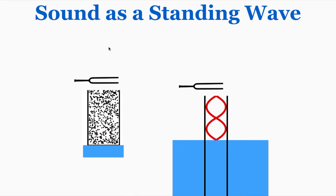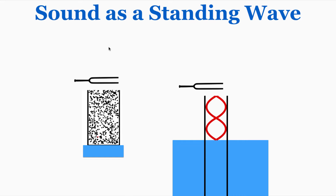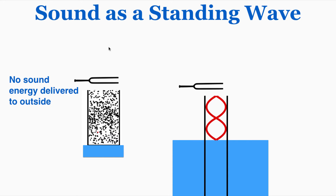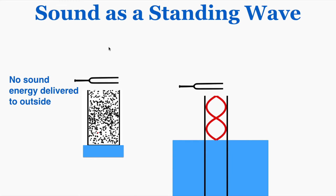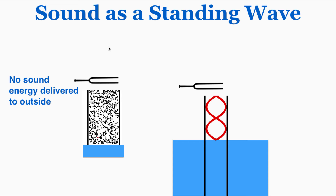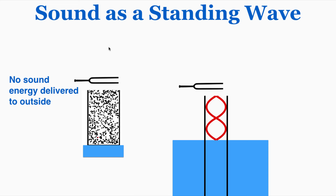When the tube is raised to where the opening is at the node, those top air particles just aren't moving at all, so because they're not moving they're not going to oscillate any of the air outside of the tube — there's no sound energy delivered to outside of the tube. The standing wave pattern doesn't continue once the sound exits the tube, so the only thing that determines the energy being delivered to the outside air is the energy of those particles at the top of the tube.